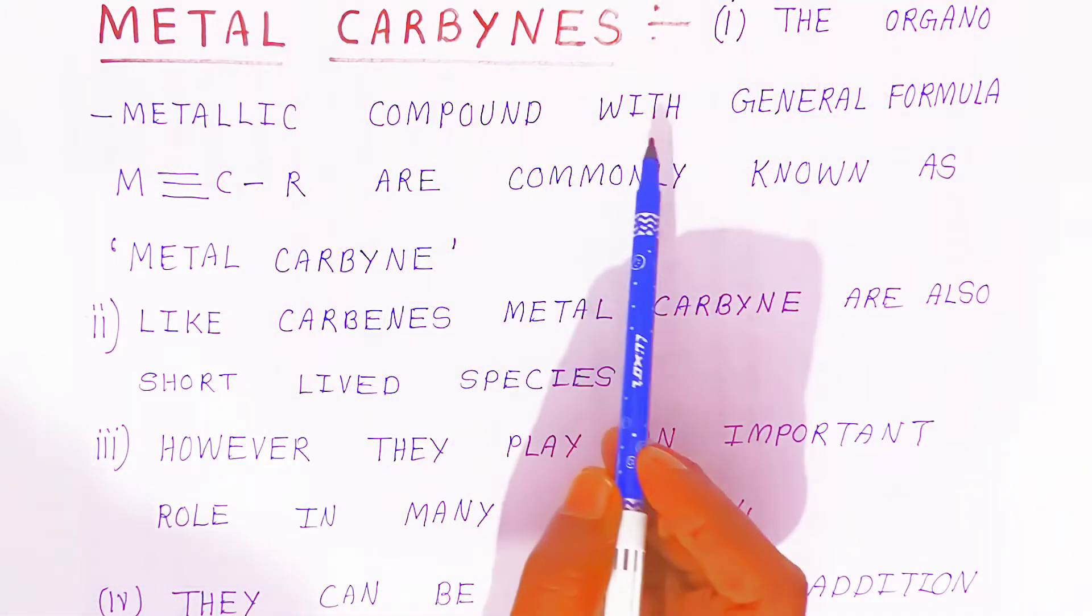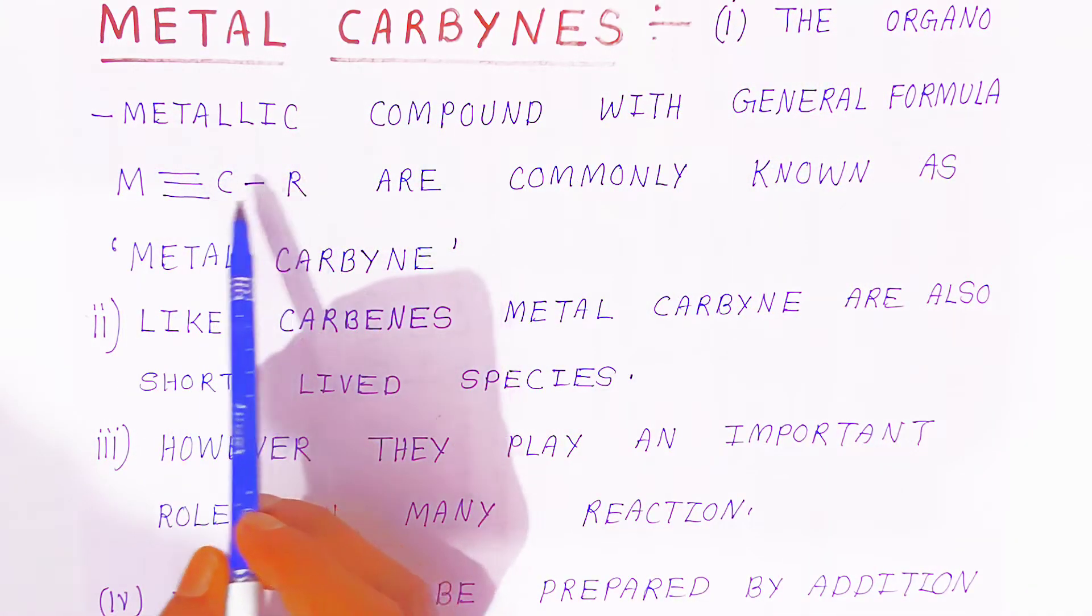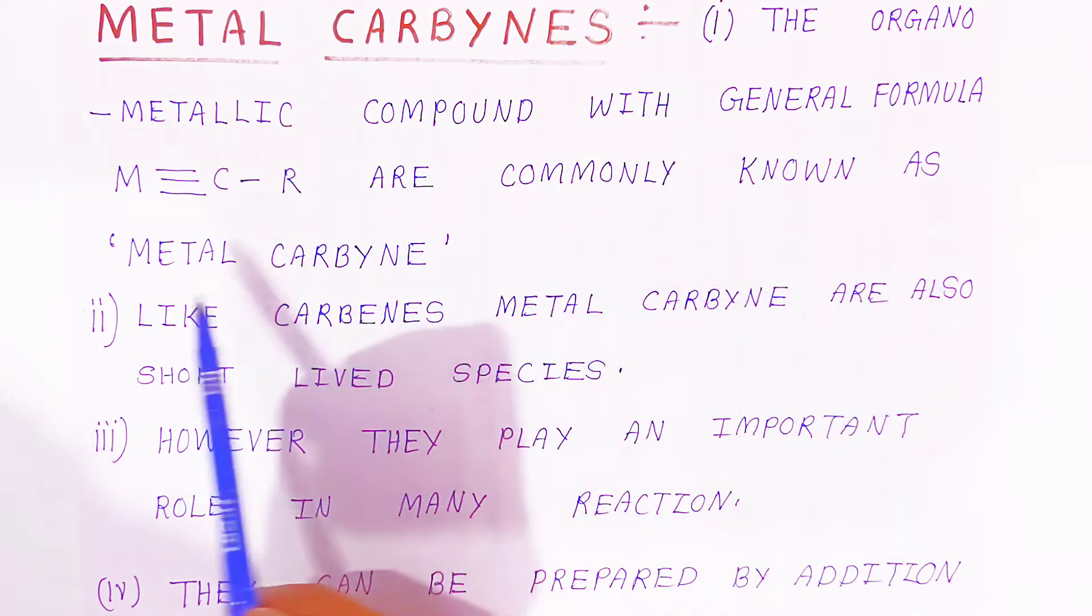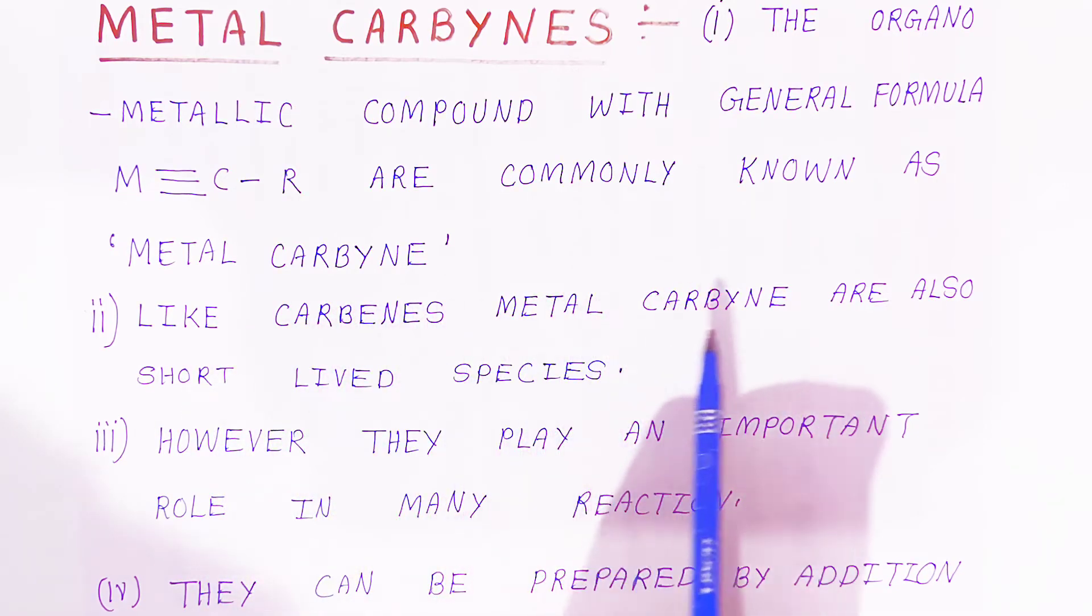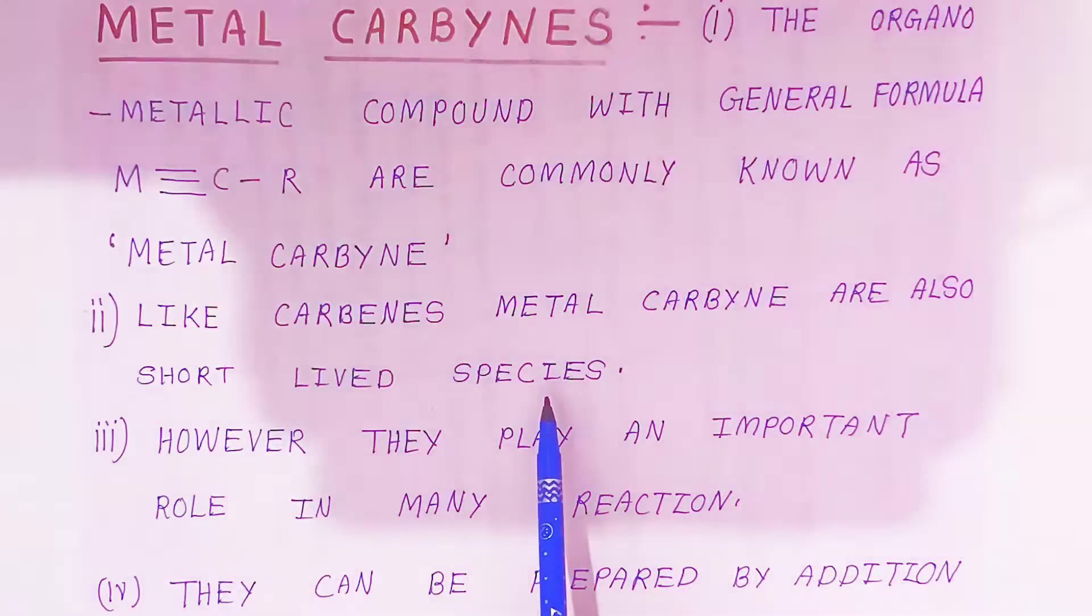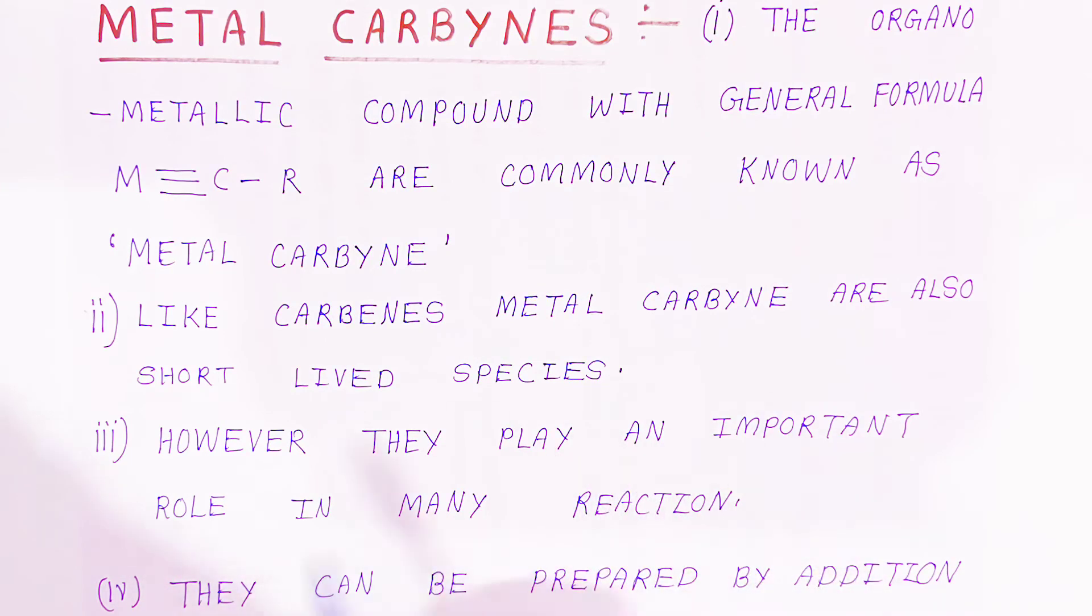The organometallic compounds with general formula metal combined with CR are commonly known as metal carbynes. Metal carbynes have a triple bond. Like carbenes, metal carbynes are also short-lived species. However, they play an important role in many reactions.